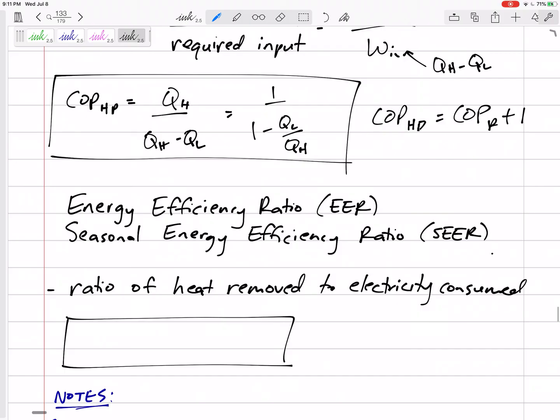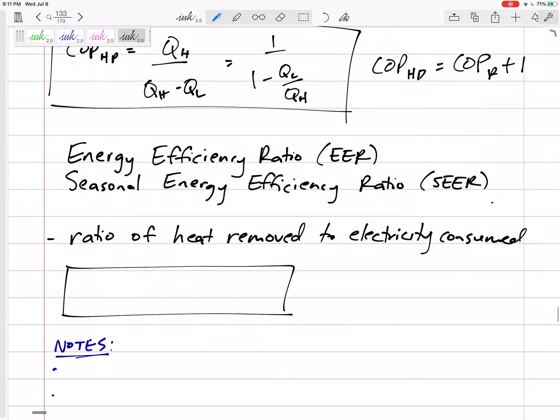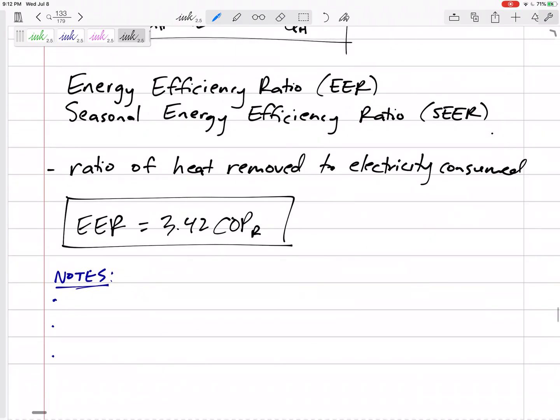Real briefly, some definitions. We have energy efficiency ratio, or the seasonal energy efficiency ratio, and it is the ratio of heat removed to electricity consumed. The energy efficiency ratio is 3.412 times the coefficient of performance of the refrigerator. We're not going to use that, and I don't have many details about that. But a few notes on these.